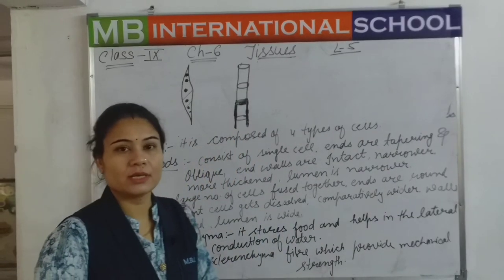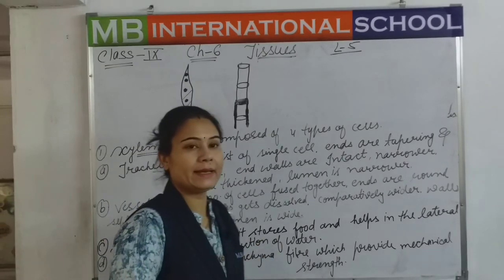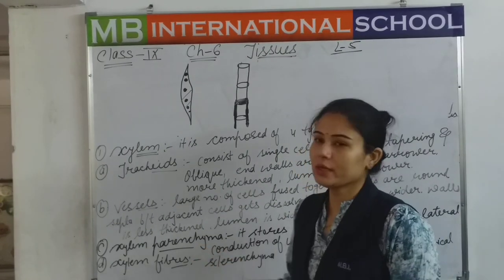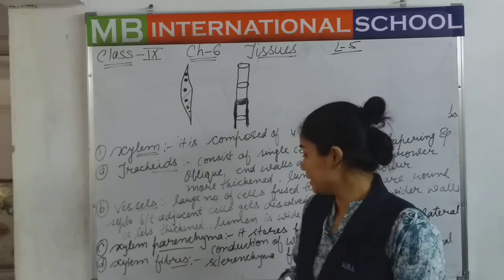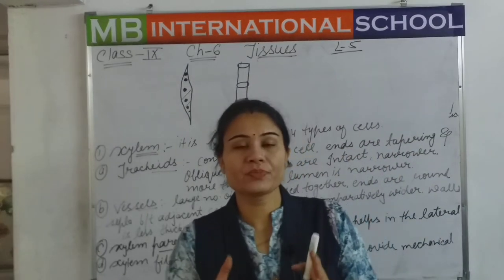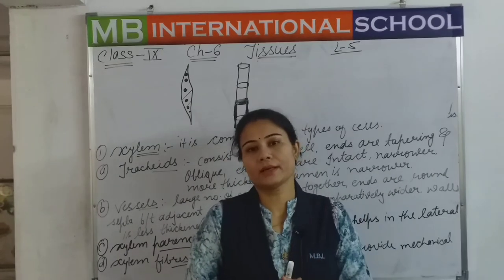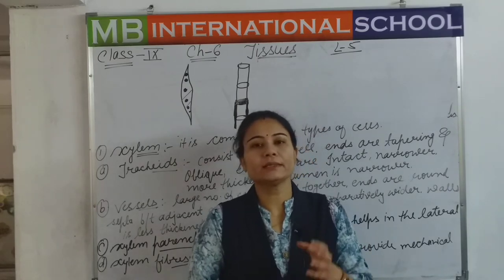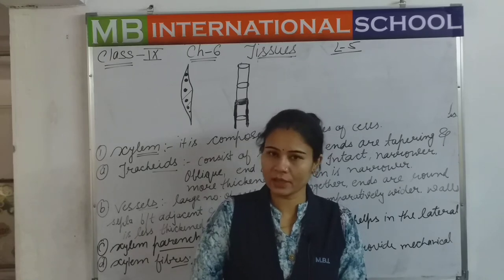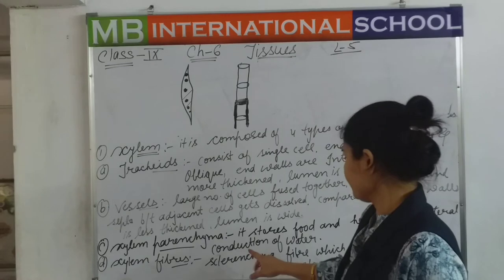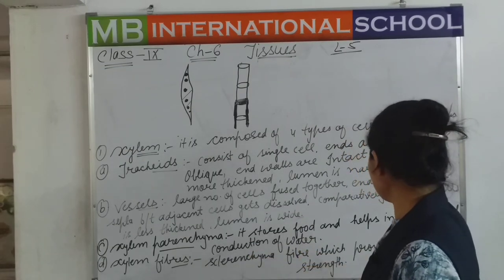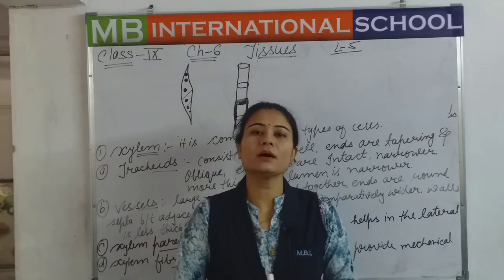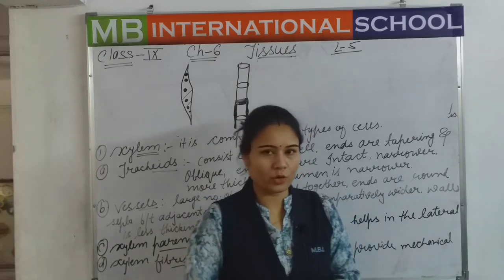The last sub-part is xylem fibers. Xylem fibers are made up of sclerenchyma fibers. Wherever we use sclerenchyma, we are talking about strength and hardness. These are supportive in nature and provide mechanical strength to the xylem.